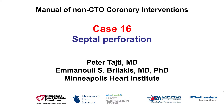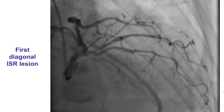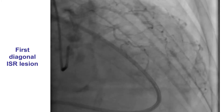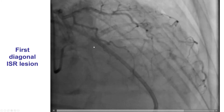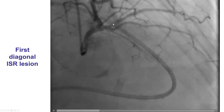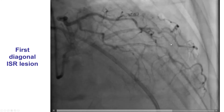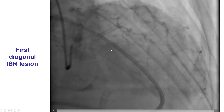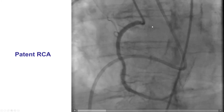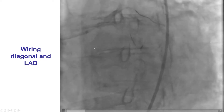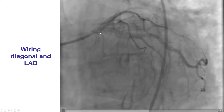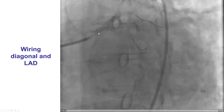This is a case illustrating the potential consequences of septal perforation. The patient was an elderly woman that presented with stable angina. She was found to have a severe in-stent restenotic lesion at the proximal portion of a large first diagonal branch. There was no significant disease in the right coronary artery, and the plan was to perform PCI of that diagonal branch.